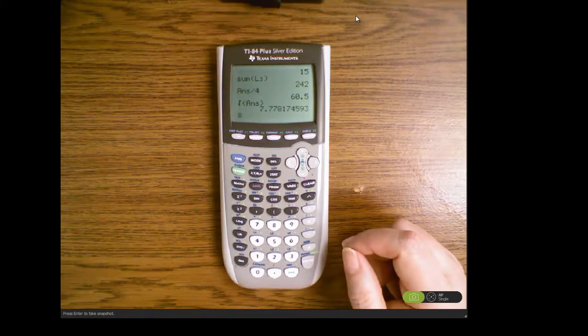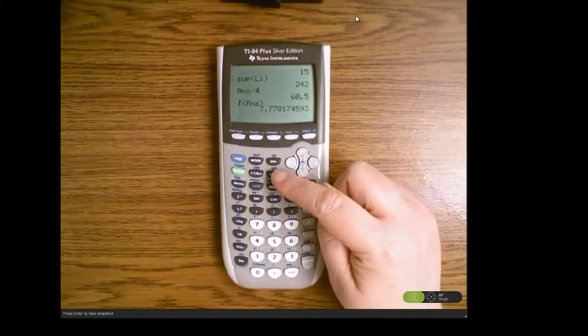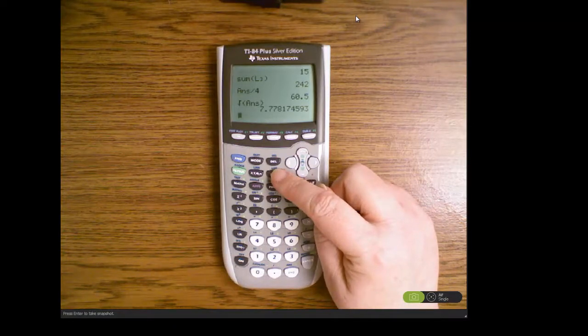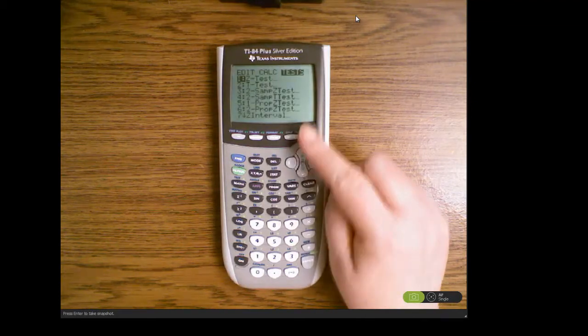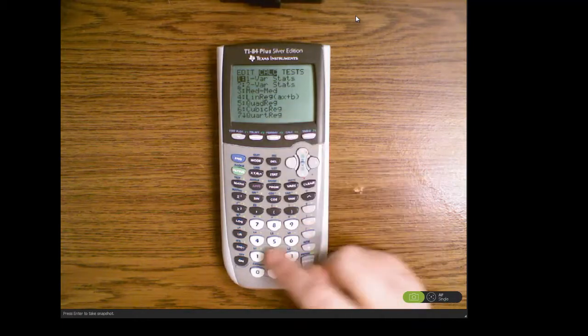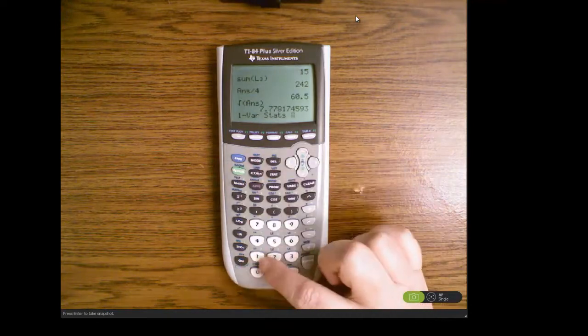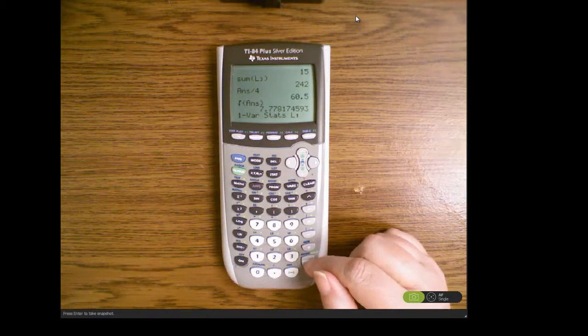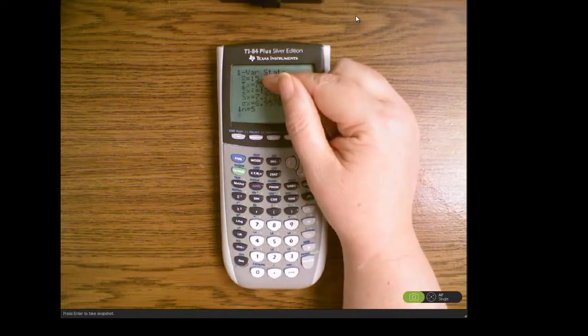To check this answer you can check it against the calculator calculating the standard deviation and the mean by pressing STAT, calculate, and then choosing one variable statistics by pressing one or enter. Always get in the habit of telling it which list your data is in, which I will tell it it's in list one, our original data, and then pressing enter.